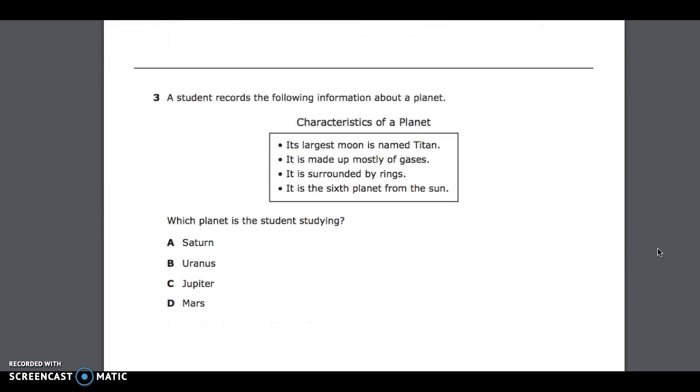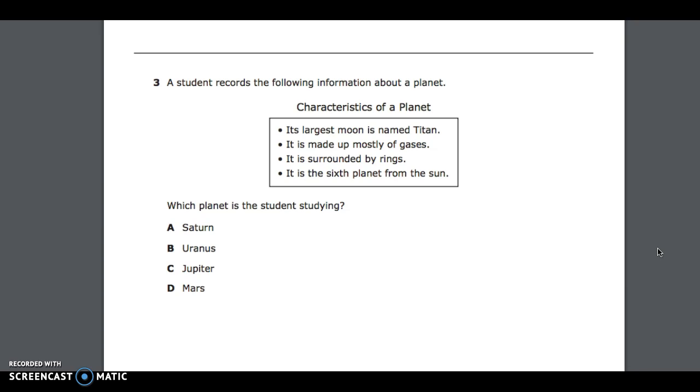Number 3. A student records the following information about a planet. Characteristics of a planet: Its largest moon is named Titan. It is made up of mostly gases. It is surrounded by rings. It is the sixth planet from the sun. Which planet is the student studying? A, Saturn; B, Uranus; C, Jupiter; D, Mars.